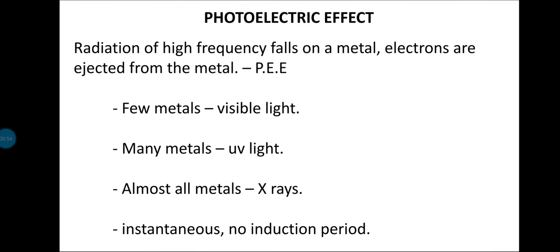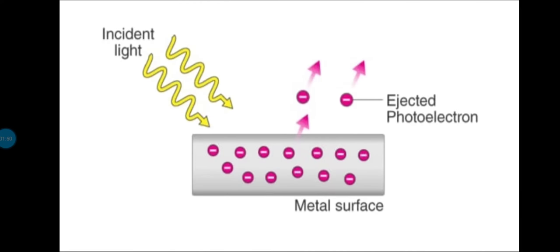The electrons that are ejected are known as photoelectrons. A few metals show this effect using visible light, many metals show it using UV light, and when X-rays are used almost all metals exhibit this phenomenon. Remember that this process is an instantaneous process — there is no time gap between the absorption of radiation and the ejection of electrons. There is no induction period.